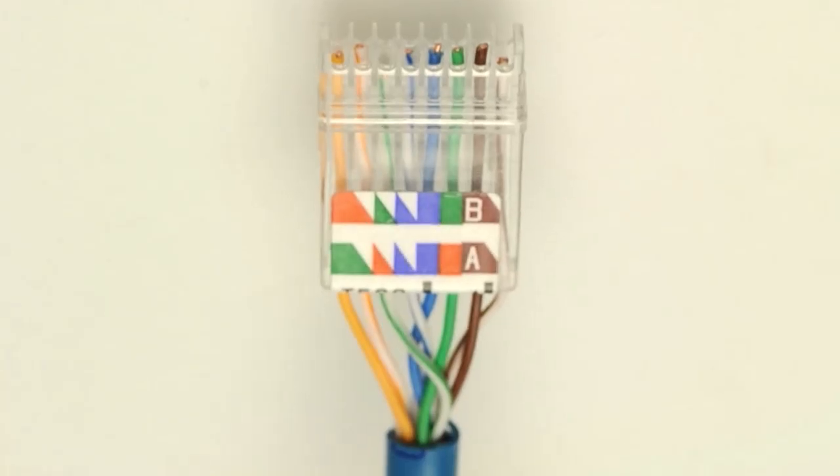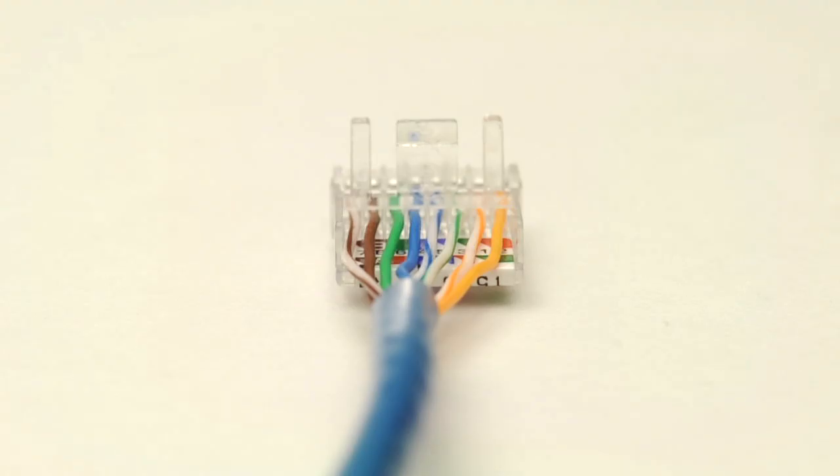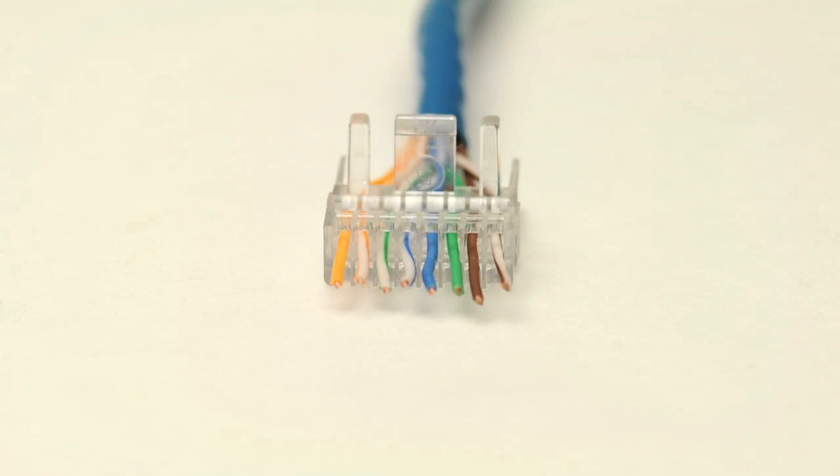The color code shows the order of conductors. You'll notice that each conductor has a color: orange, orange white, green white, etc.